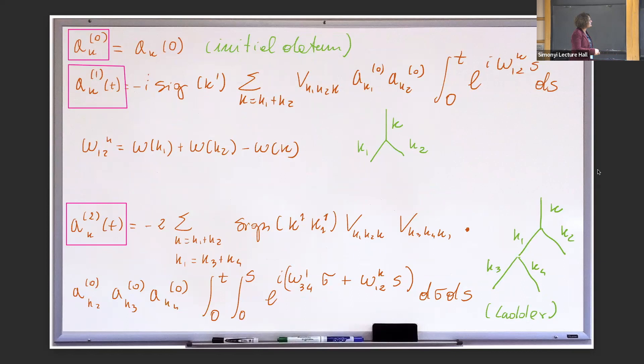We have the second term, and then the next graph or family of diagrams: originally we have this, then you see we split once more. So what was K1 becomes K2 plus K3. You start seeing these objects that also keep track of what you're doing. So this is a sort of first-order in time, and this one is second-order in time.